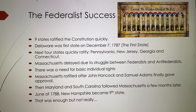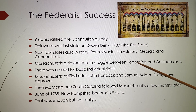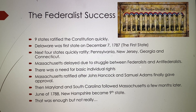Massachusetts ratified after John Hancock and Samuel Adams gave their approval, but they stipulated a need for a Bill of Rights to be added. Maryland and South Carolina followed a few months later. Then New Hampshire became the ninth state to ratify, giving the Constitution enough states to technically take effect.